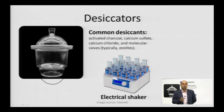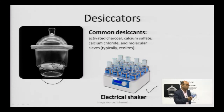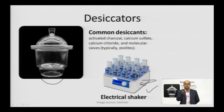We have also shown the electrical shaker, which is used for extraction. In the electrical shaker you place the material and the machine gives jerks — due to these jerks, the content of the cellular material of the plant cell dissolves into your solvent.